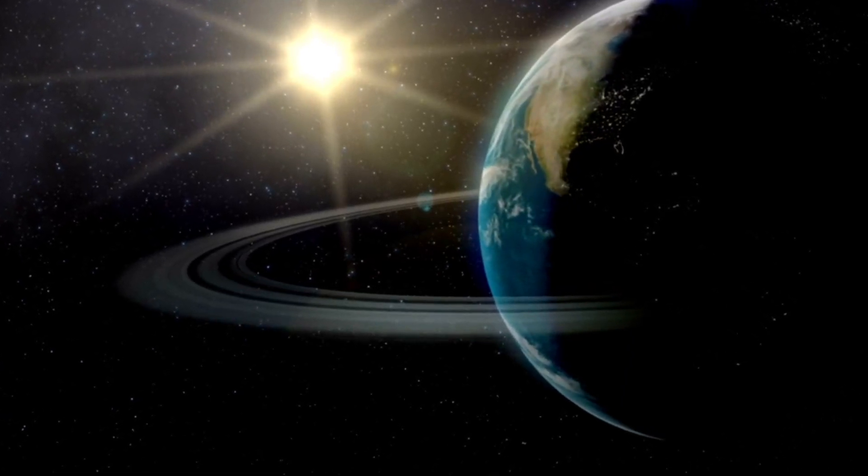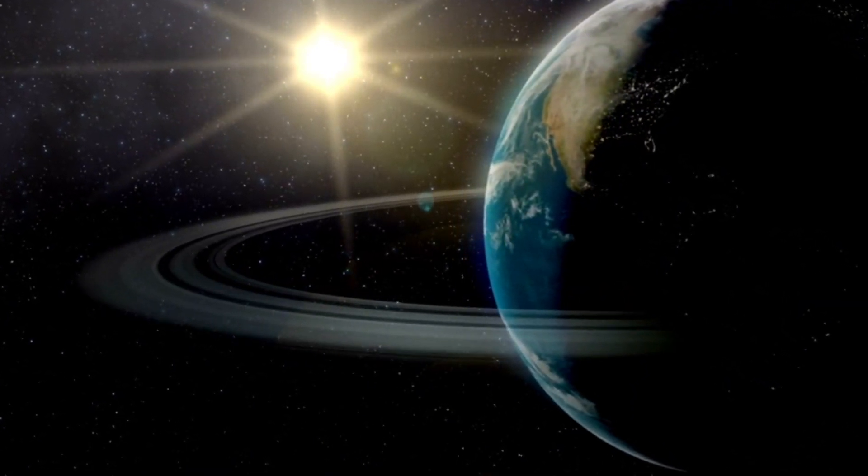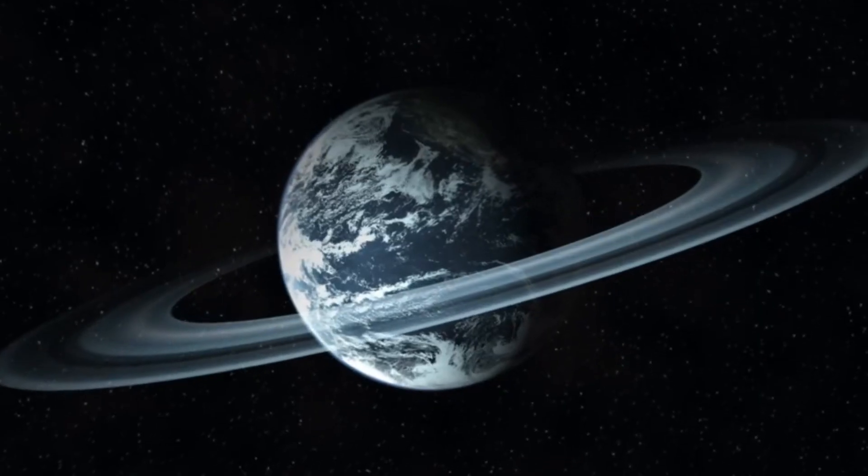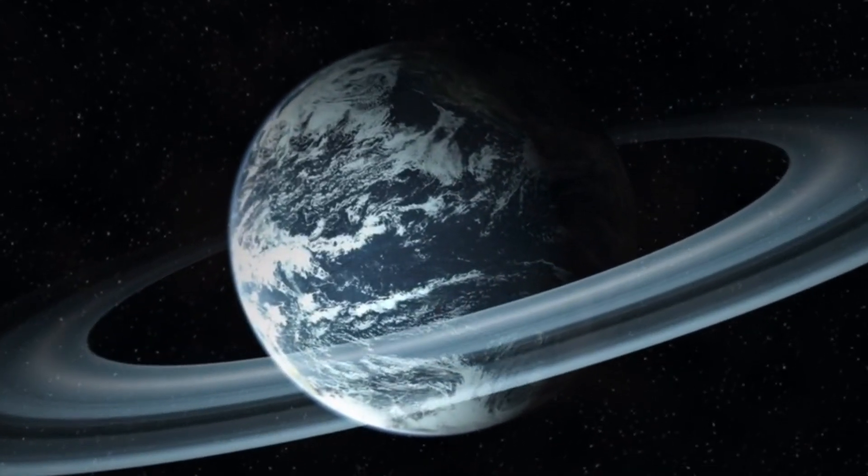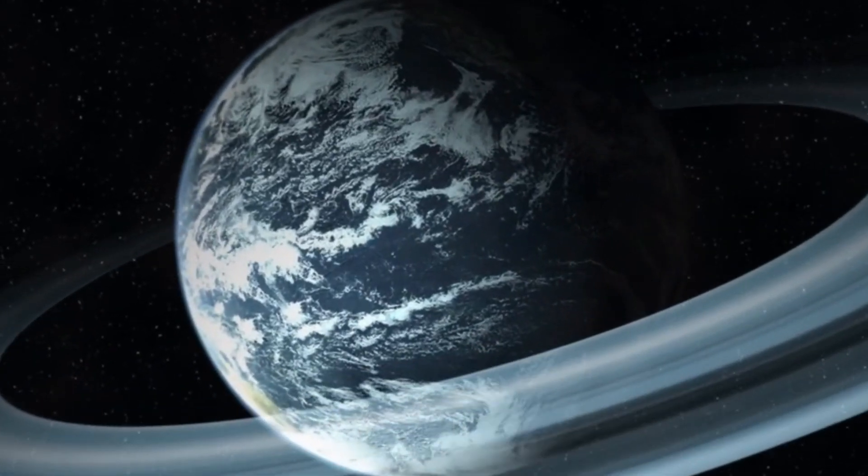Many probably remember from a school geography course that the rings of Saturn are a system of flat concentric formations of ice and dust located in the equatorial plane of the planet.